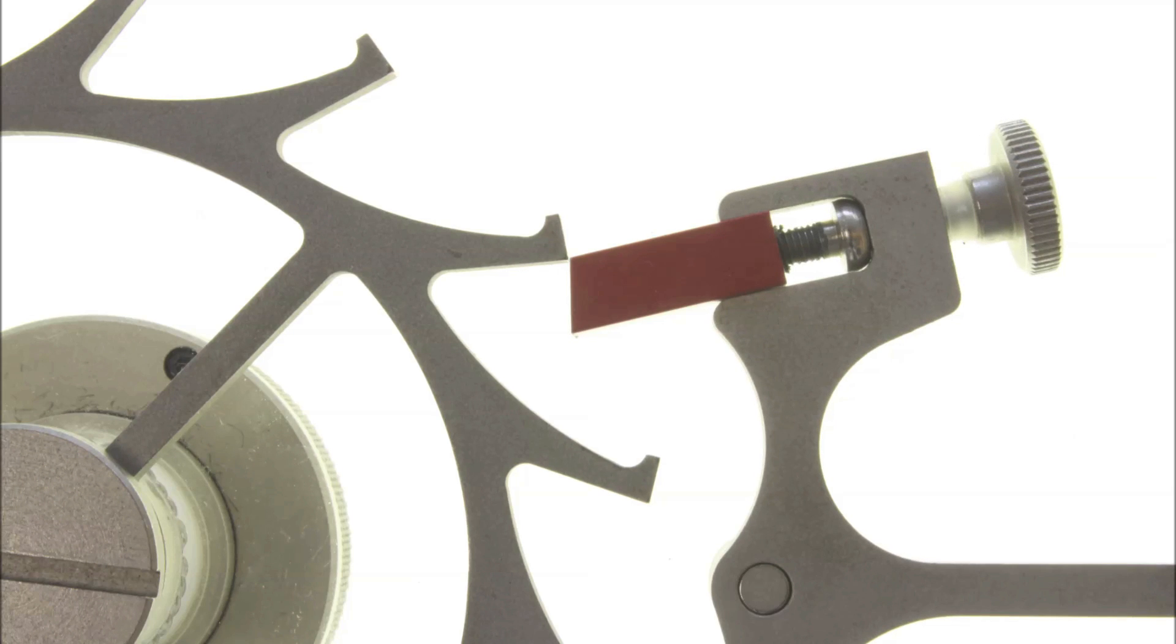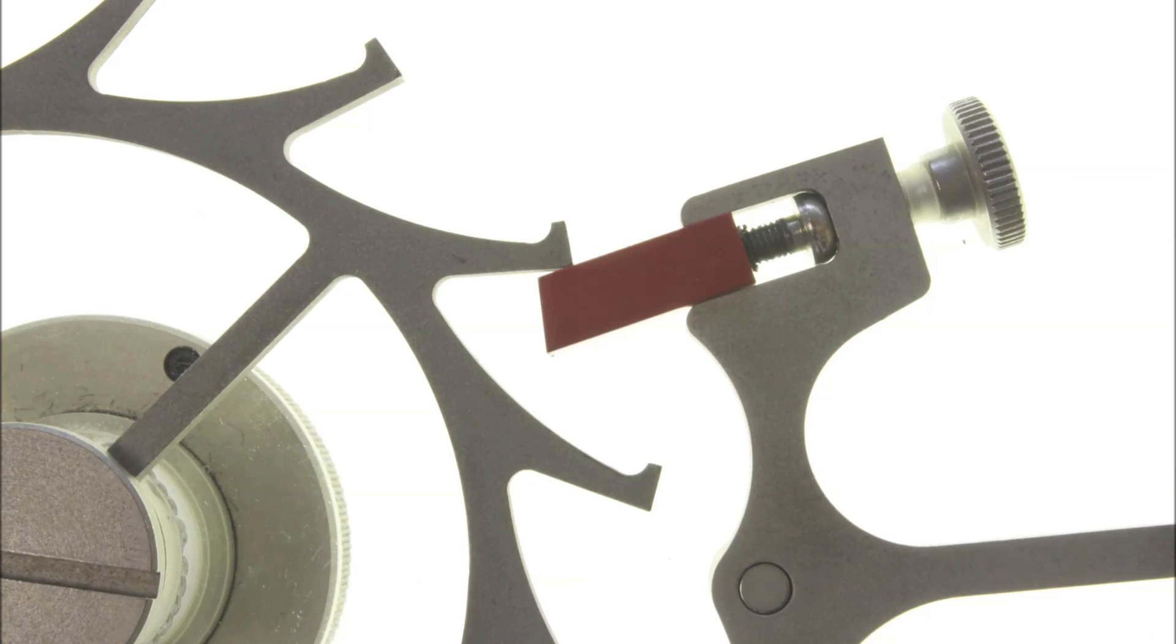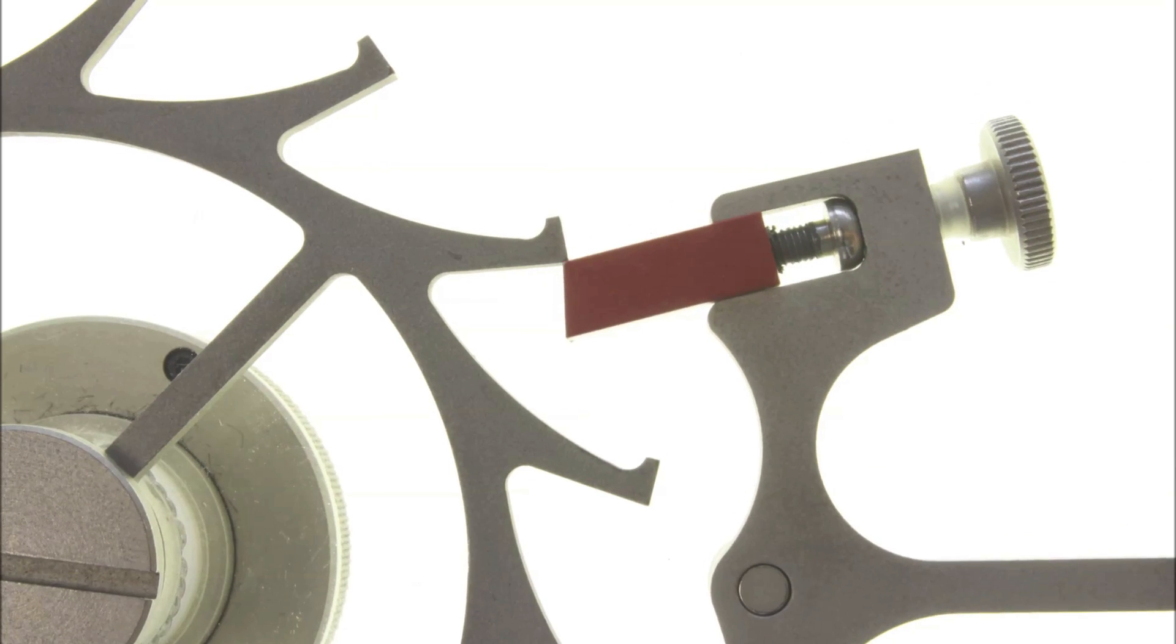Together, geometric and dynamic recoil account for the backwards motion of the escape wheel that occurs during unlocking. Look for the next video that will show why this information is important while servicing the watch.